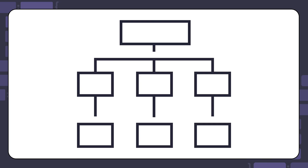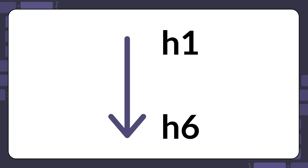Use headings in a hierarchy that reflects clear organization. For example, the page title should be an H1. Major sections should be introduced with H2 headings. Subsections with H3, and so on down to H6.